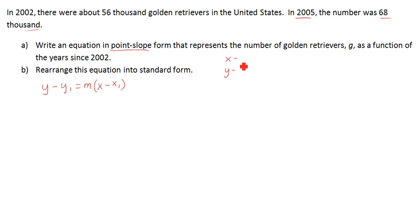Hopefully, you decided that the number of retrievers depends on the year. Now, it actually asks for years since 2002. In the end, it also asks us to use a g for golden retrievers. So in the end, that y needs to change into a g. The x we can just leave as years since 2002 since we've defined that to be x.